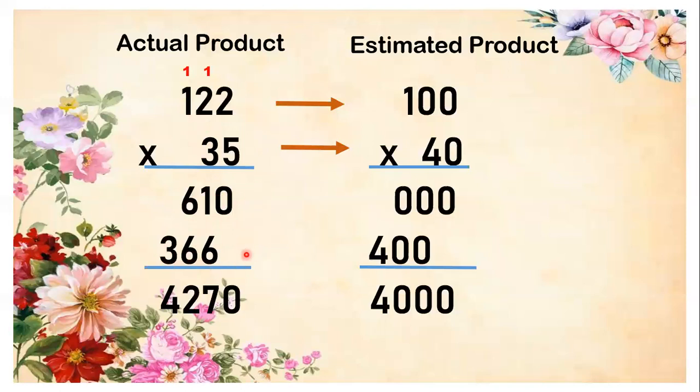Add both the two partial products. 0, there's no number under it, so just bring down the 0. 1 plus 6 is 7, write 7. 6 plus 6 equals 12, write 2 and regroup 1. Let's add 1 plus 3 equals 4. We have an actual product of 4,270. So we are done with the actual product.